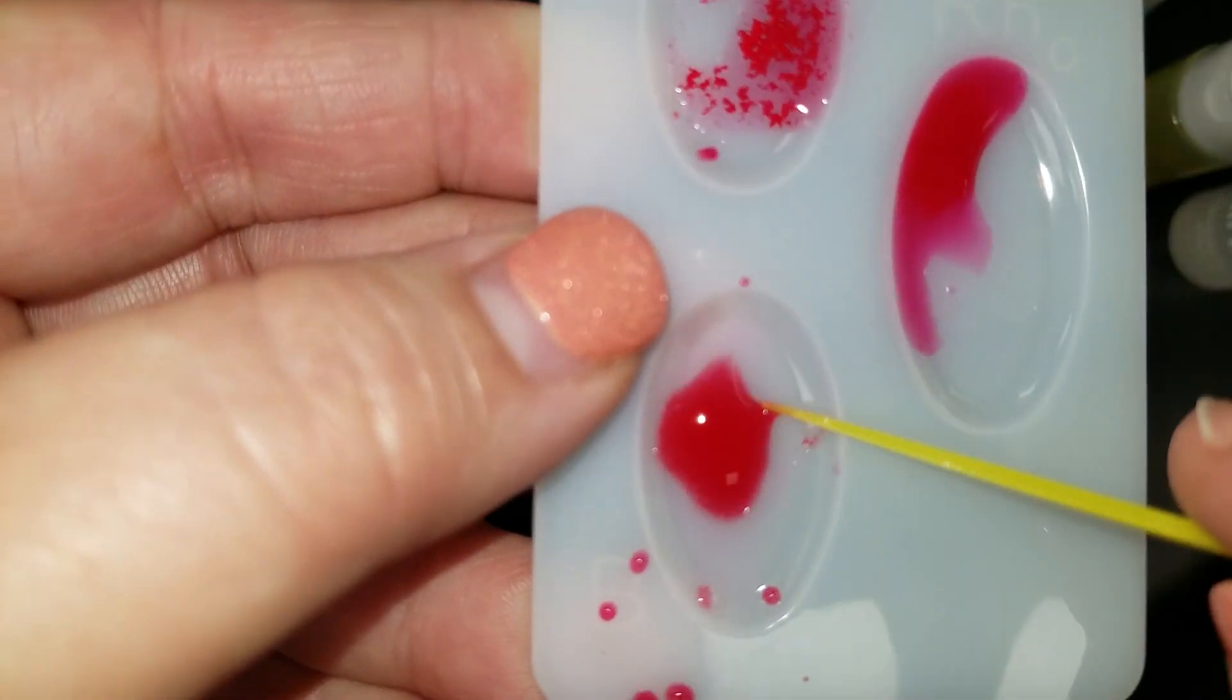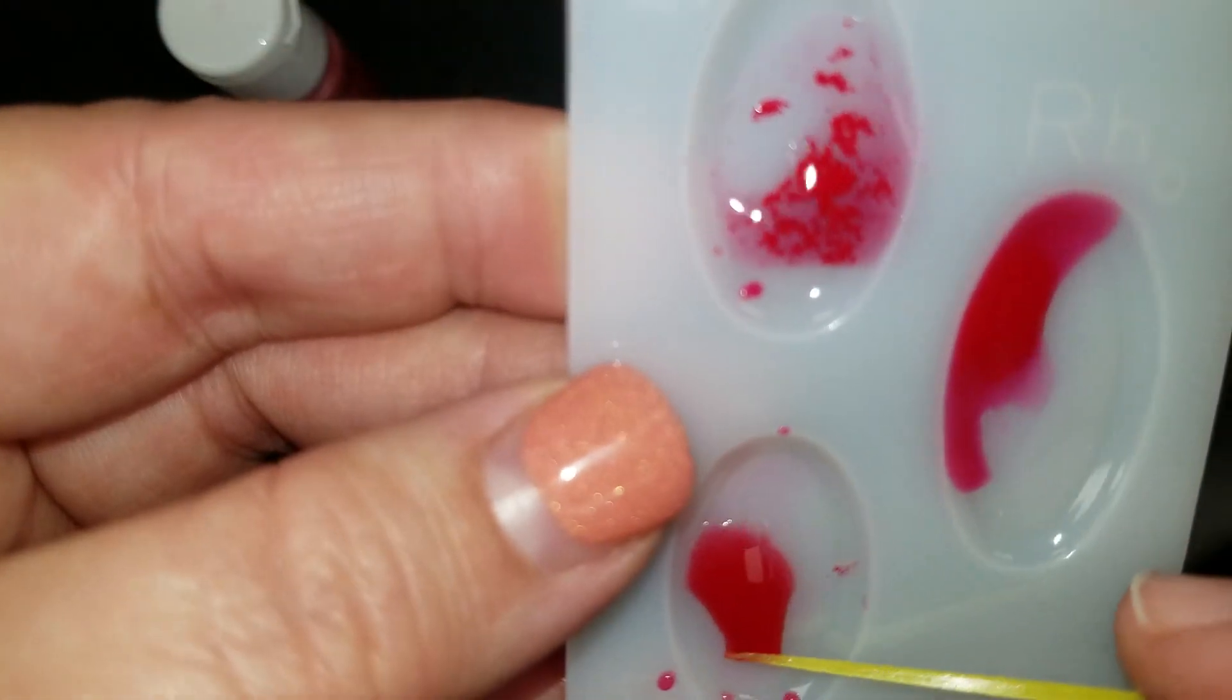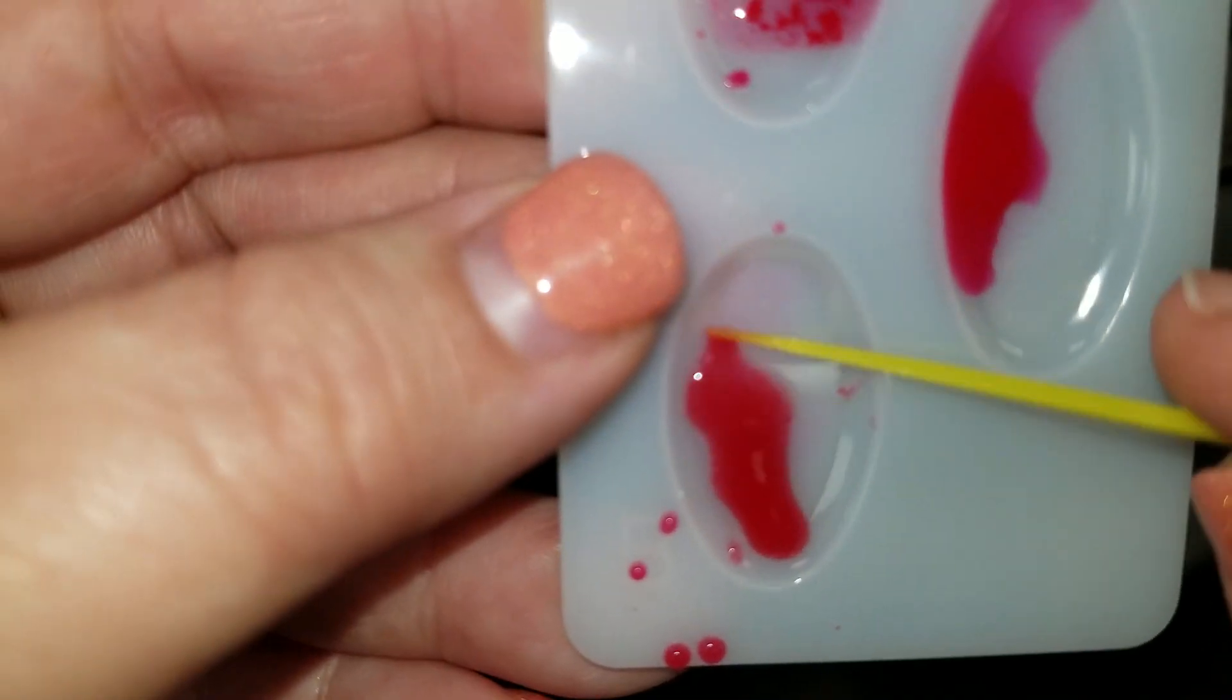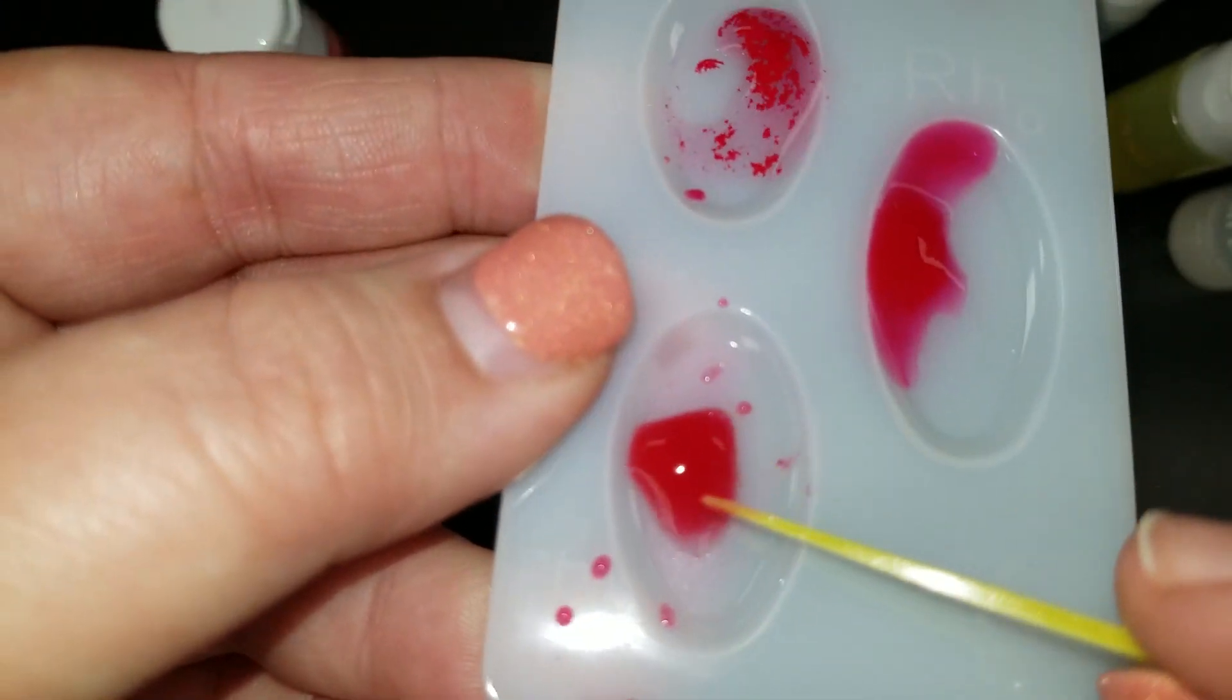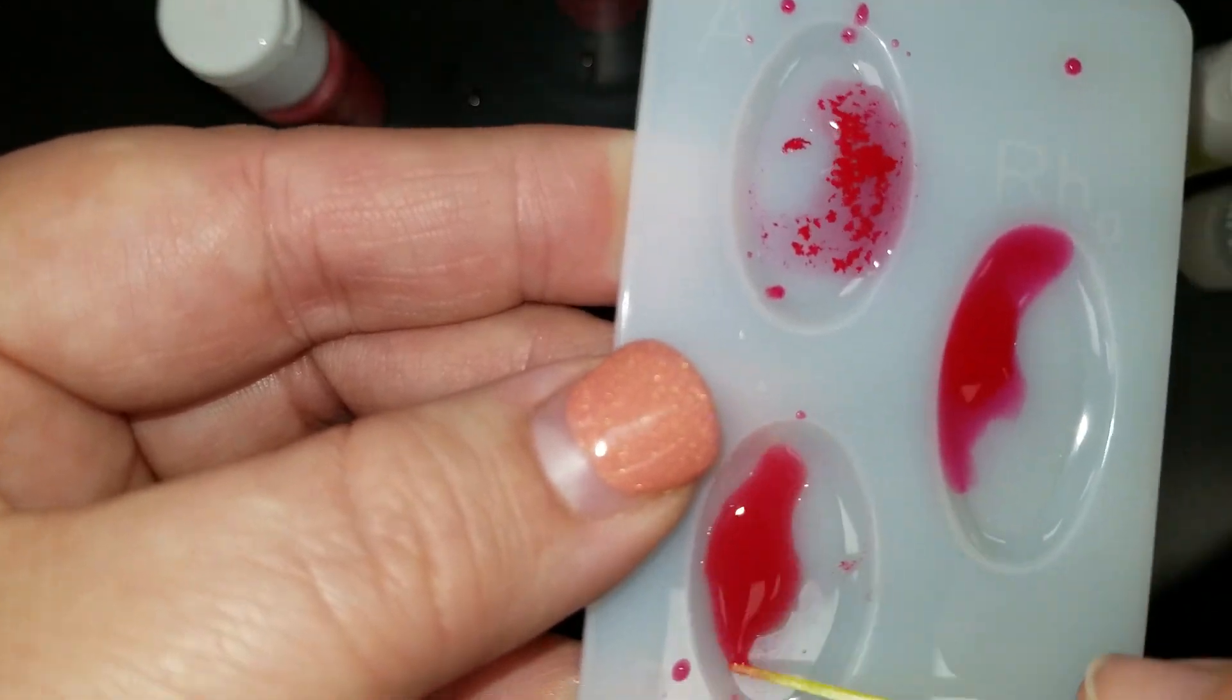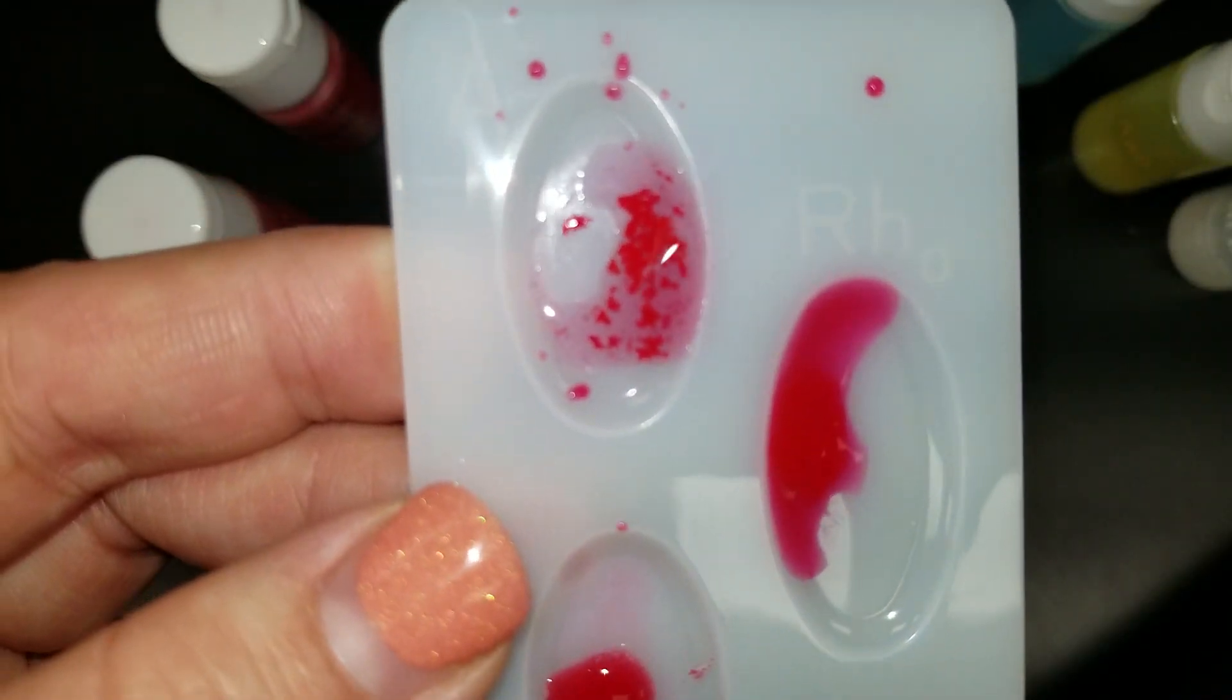It's not as clear a reaction as A, but if you sort of tilt your disc back and forth, you'll see that it's not just a nice clear liquid. There are these little red dots that are forming in there. So that would be a positive reaction for B, those little red dots that you see appearing in there. It's not just a fully clear red liquid, but we've got these little red droplets in there. So that's a positive for B. So she also has the B antigen.